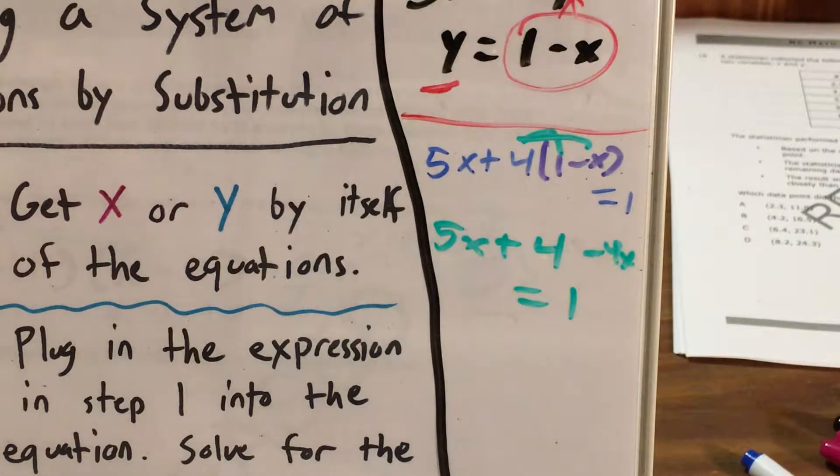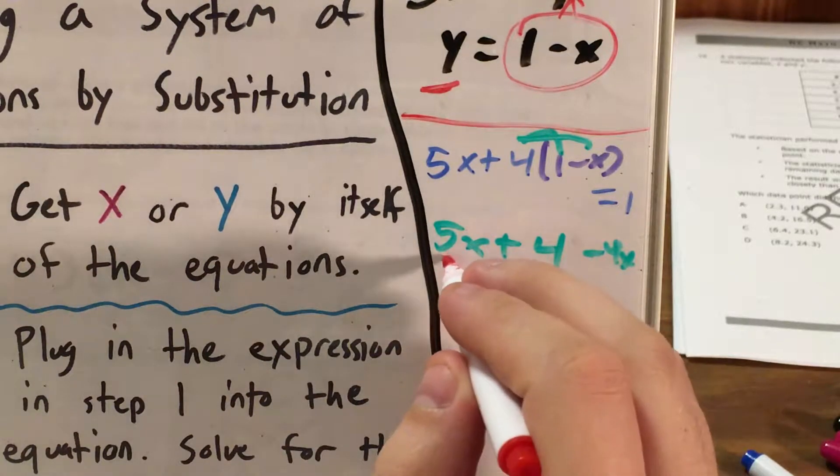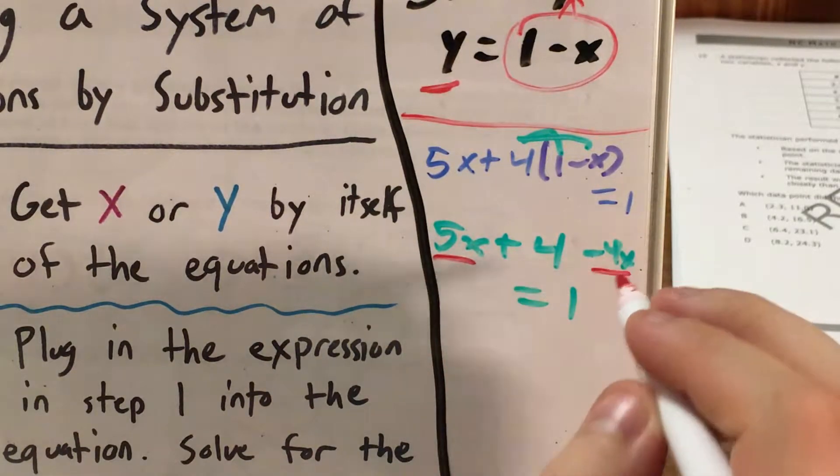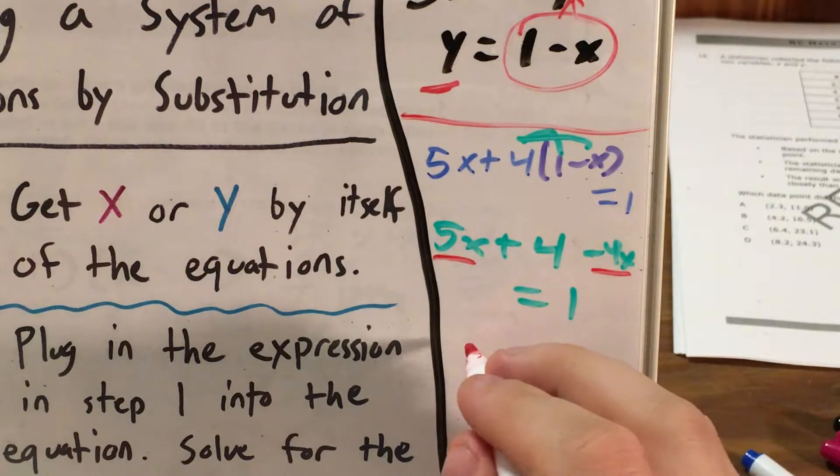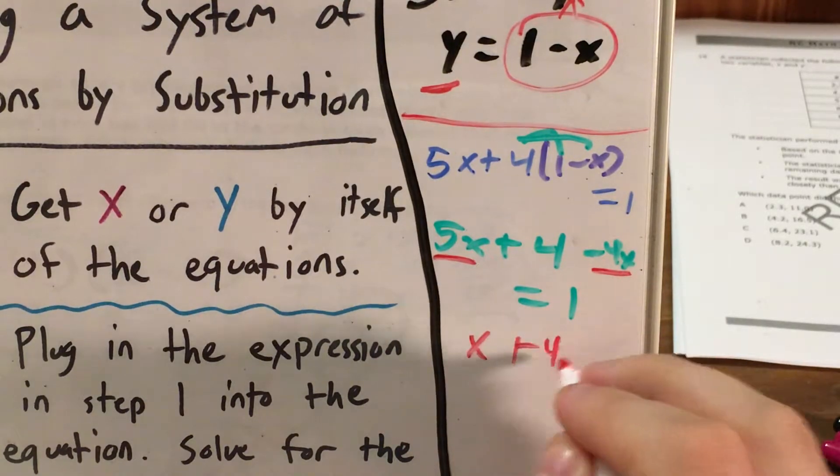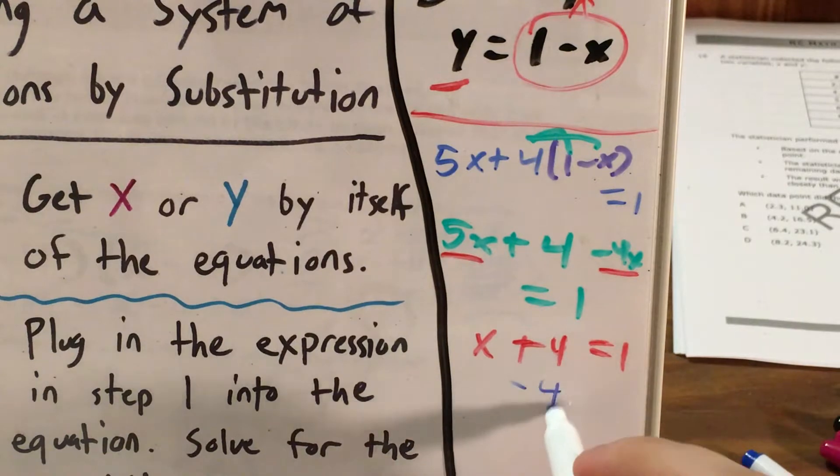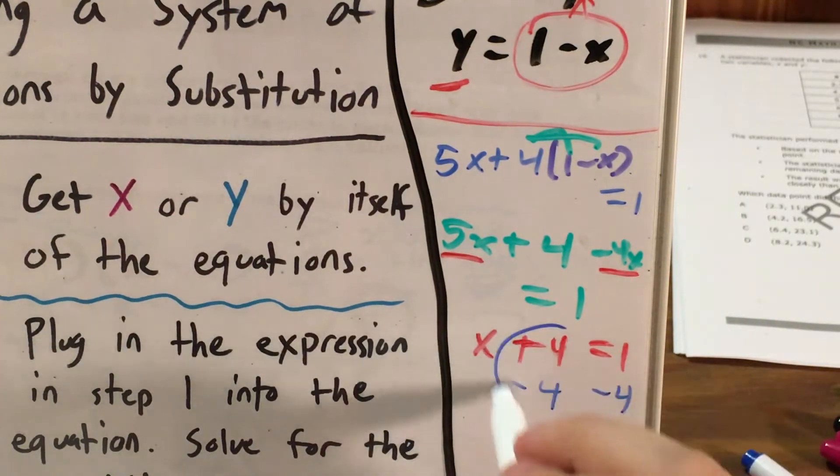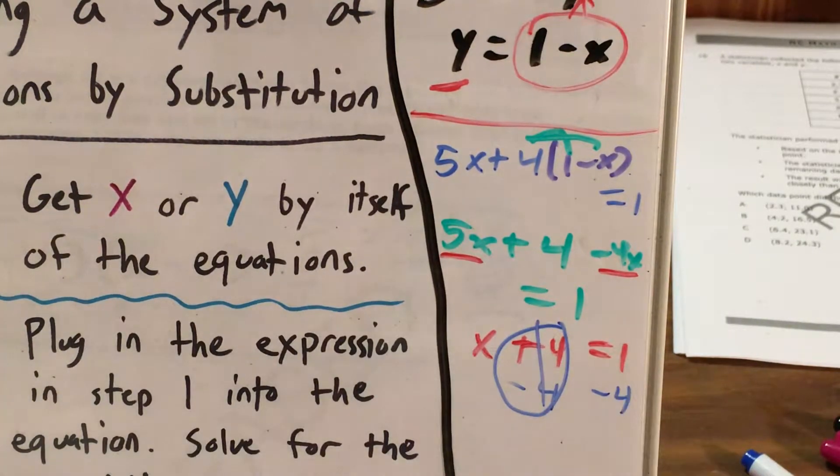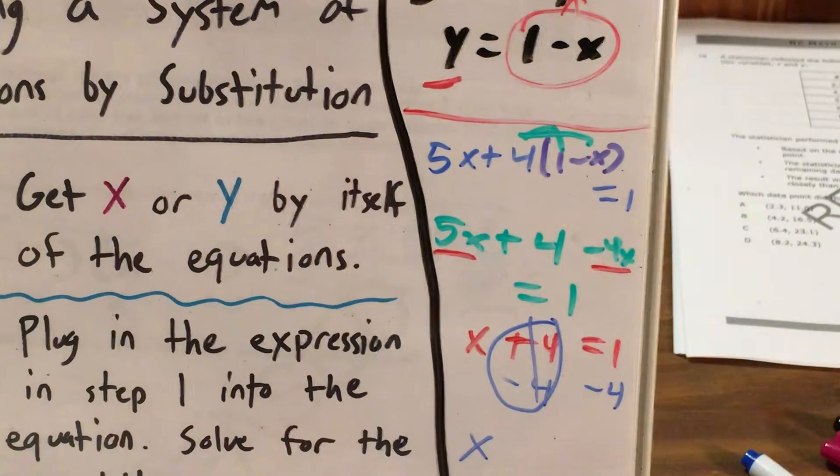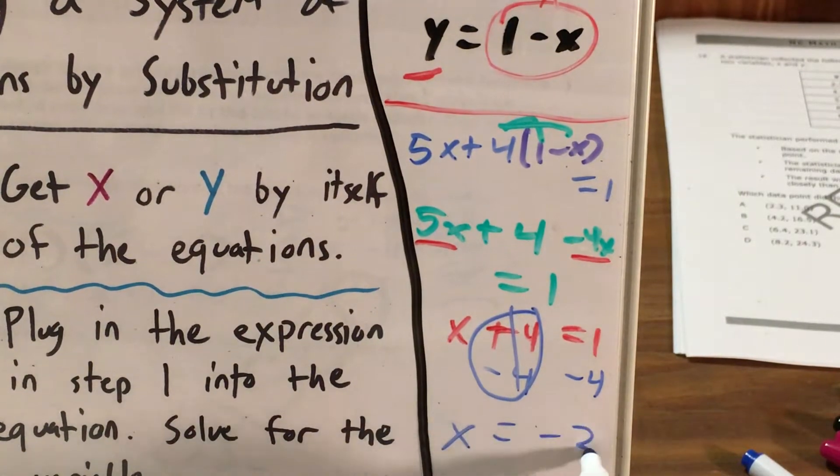And at this point, I can see that I have some like terms. 5 x's minus 4 x's is actually just going to give me x plus 4 equals 1. And at this point, I have a variable I'm trying to get by itself. It's being added to 4. I subtract 4 from both sides. Plus 4 and minus 4 cancel. And 1 minus 4 will finally get me to x equals negative 3.